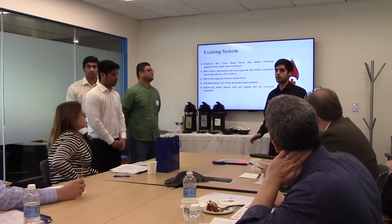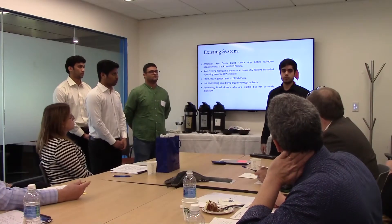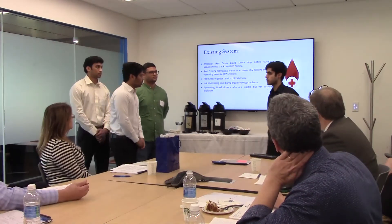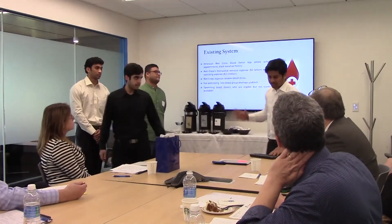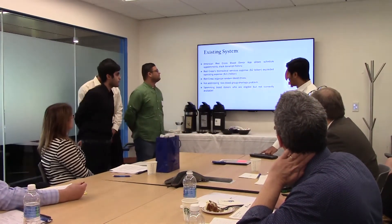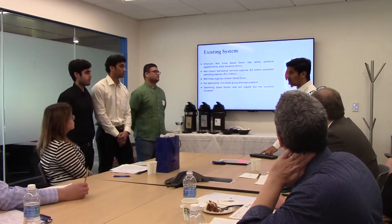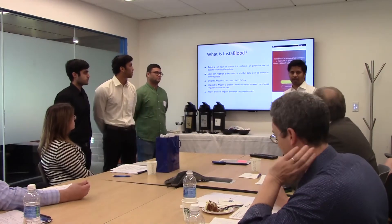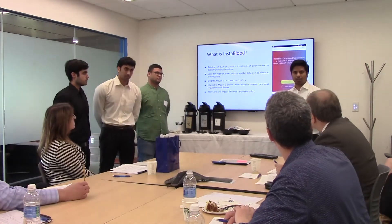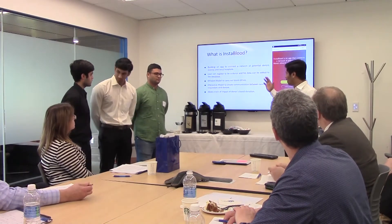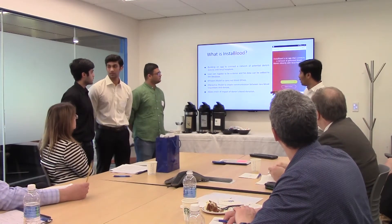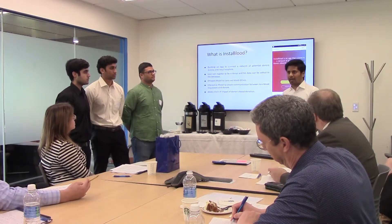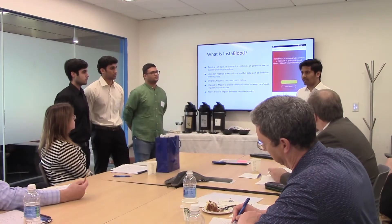Another problem is that existing systems do not address rare blood types like O negative and O positive. So basically what our model does is try to tackle some of these problems. As we saw the existing system drawbacks, here comes an opportunity for InstaBlood as our team to address this issue. We are going to connect as many potential donors to our existing database, collect their data, register them as donors in our system, and carry out an efficient model to tackle the existing system drawbacks.